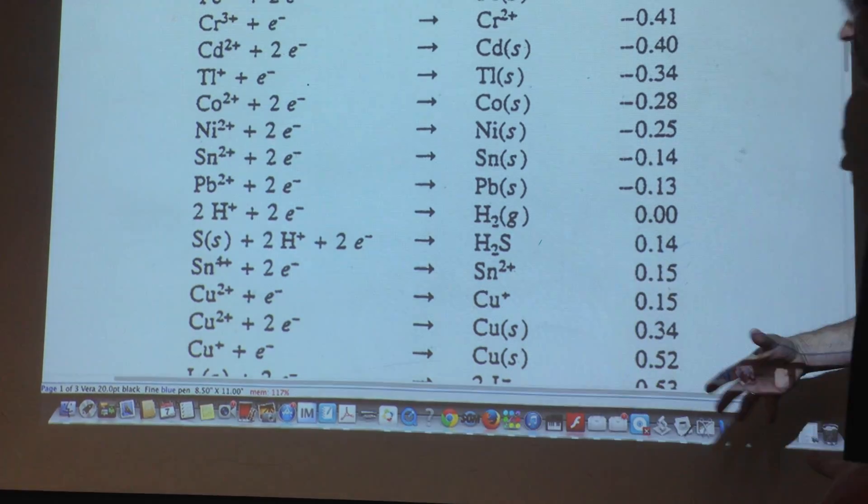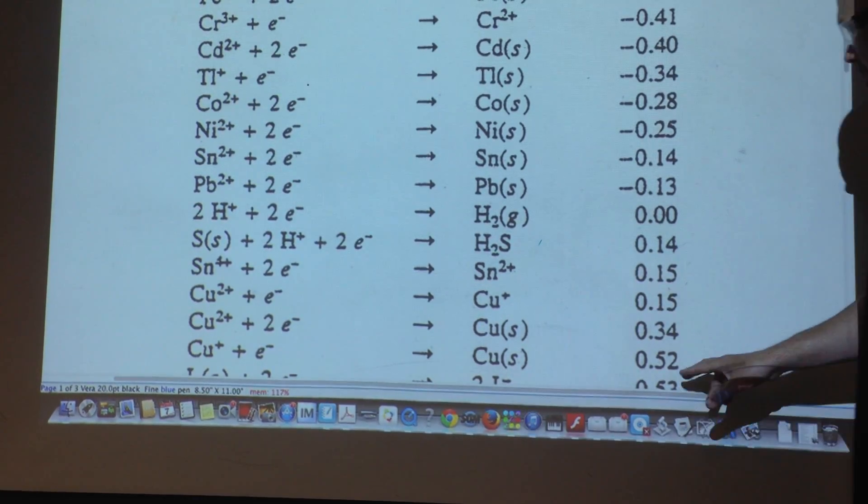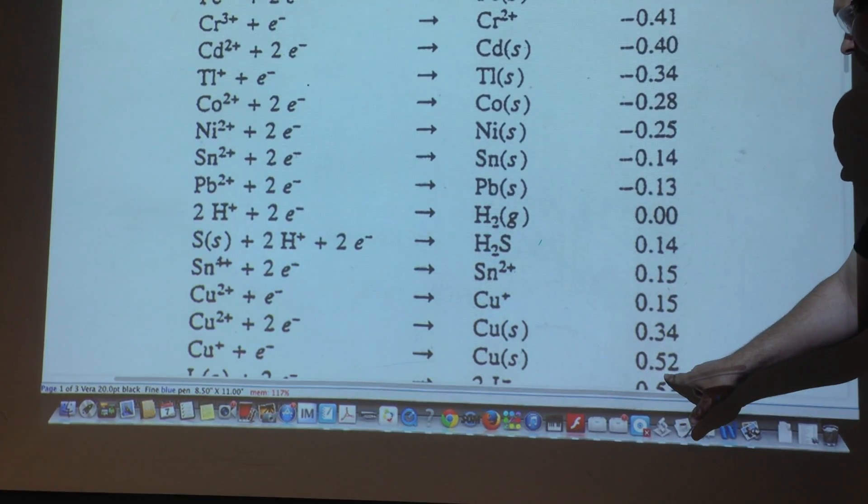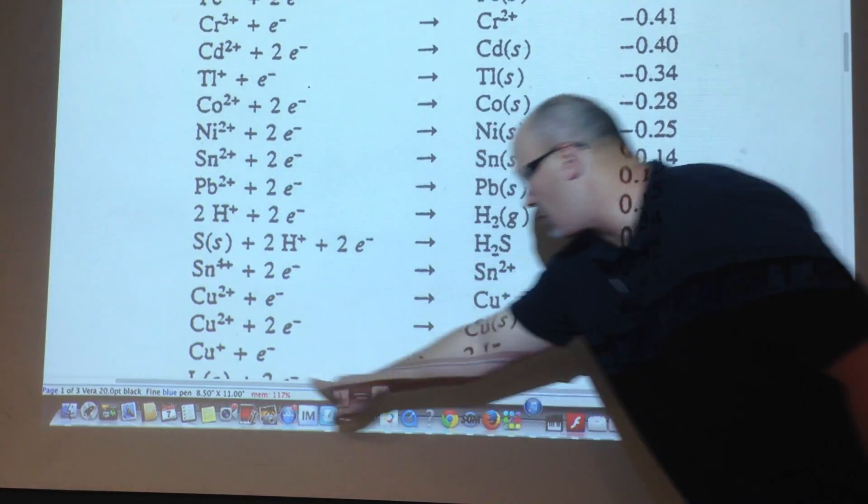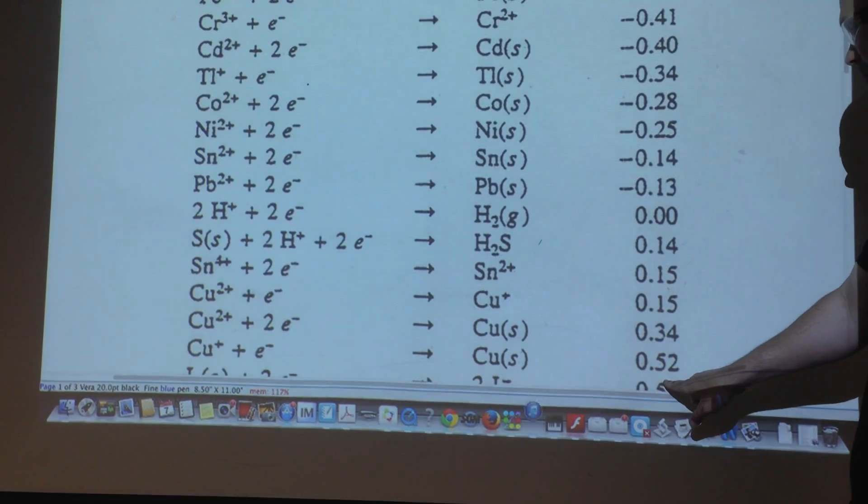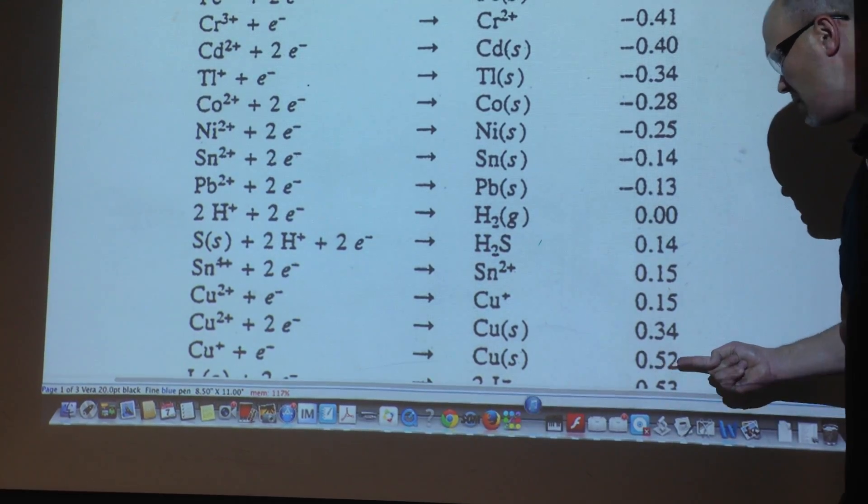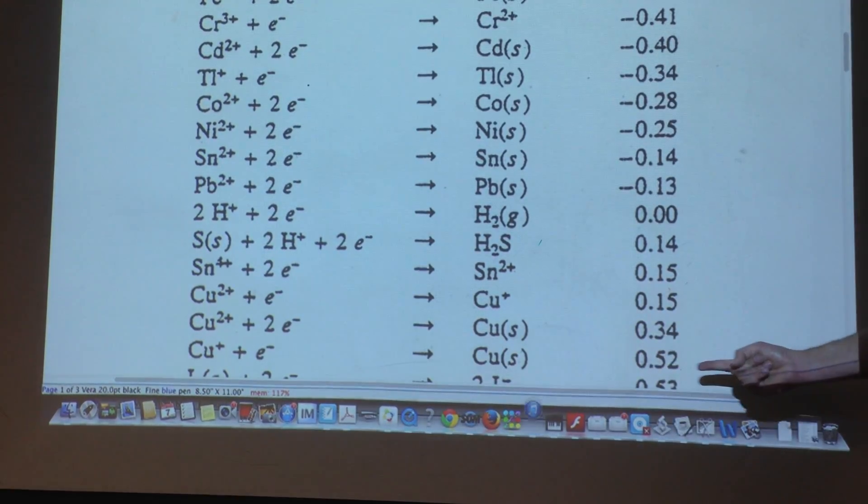And something that would be lower is nitric acid. Nitric acid has a reduction potential of about 0.8. So it's 0.8 volts below the copper, it'll be listed here, I don't have it on this table, is 0.8. It would force the copper, who is negative 0.52, to go in this direction.